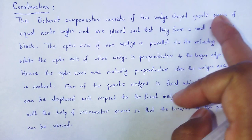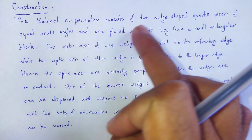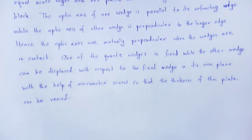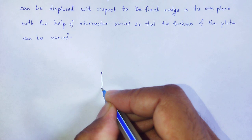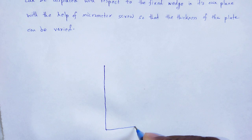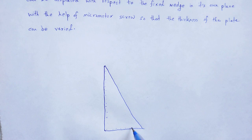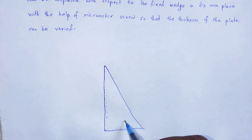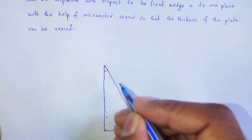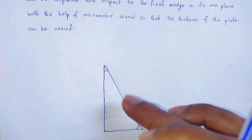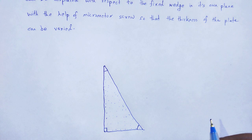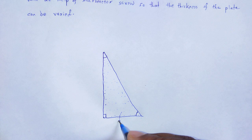The wedge-shaped quartz crystals have equal acute angles of 45 degrees and one right angle of 90 degrees. This is quartz crystal one. Another quartz crystal is placed in such a manner that they form a small rectangular block together. The thickness of quartz crystal one is denoted T1 and the thickness of quartz crystal two is denoted T2.